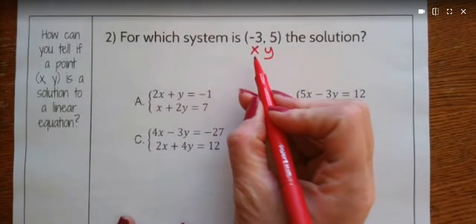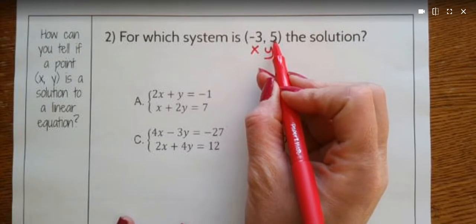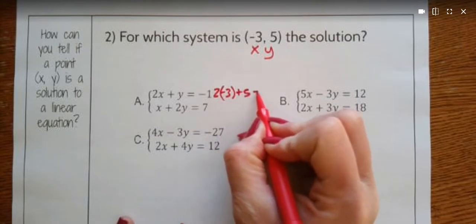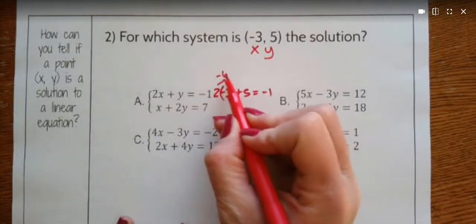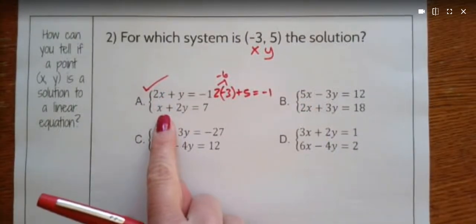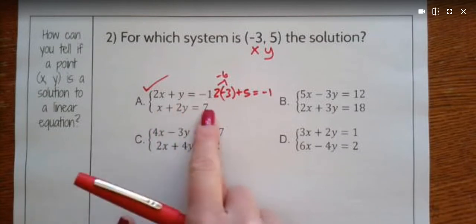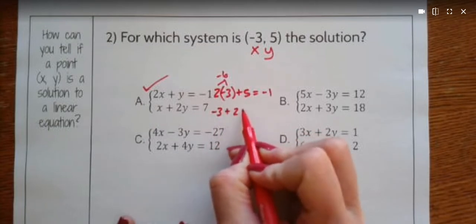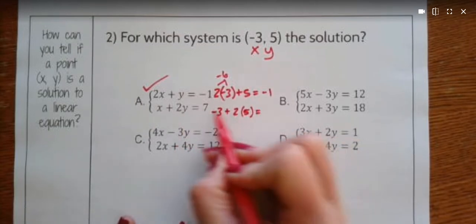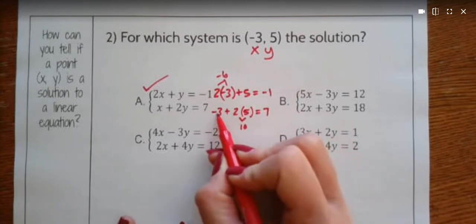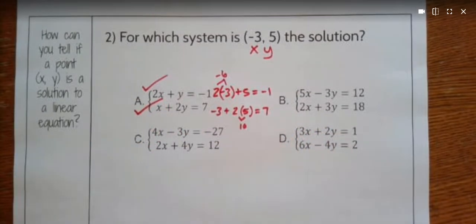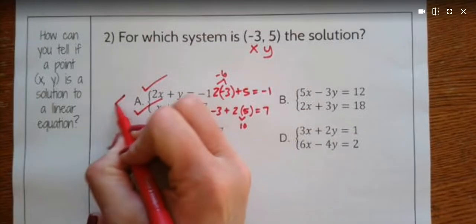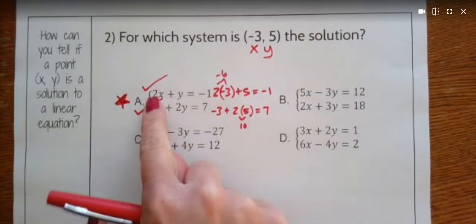Let's try system A. Wherever I see x I make it −3, and wherever I see y I make it 5. So 2 times x plus y: that's −6 plus 5 which equals −1. Yes, it checks out in the first equation. Now I test the second: −3 plus 2 times 5 equals −3 plus 10 equals 7. Yes, true for that point too. So the system for which (−3, 5) is the solution is A.